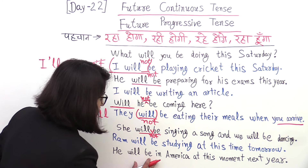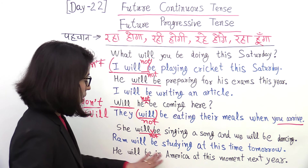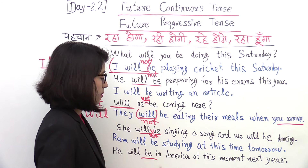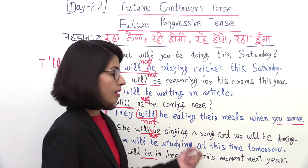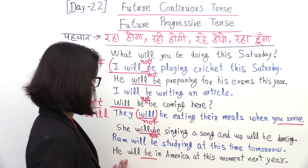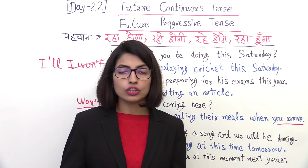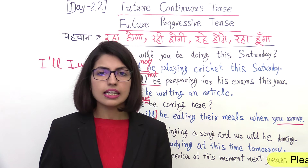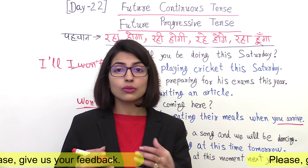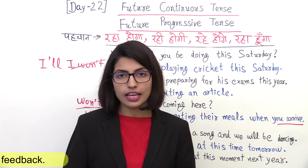Last but not least: He will be in America at this moment next year. Now you might wonder — there is no -ing form here, I just said 'he will be.' You can also say: He will be living in America. This brings up an important point: verbs are of two types — stative verbs and action verbs. Action verbs can take the present participle form, but stative verbs usually do not. However in many situations when they are used in a different way, they can. I will make a separate video to explain this as it confuses many learners.